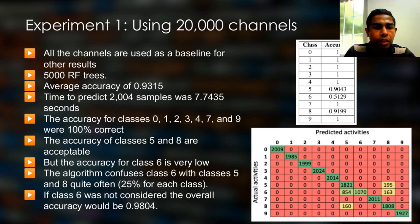So this is our first experiment. In this first experiment, we directly use all the 20,000 channels to train a random forest classifier as a baseline. We had used 5000 random forest trees and the average accuracy we received was 0.93. Actually, the accuracy of the classes 1, 2, 3, 4, 7, and 9 were 100 percent.